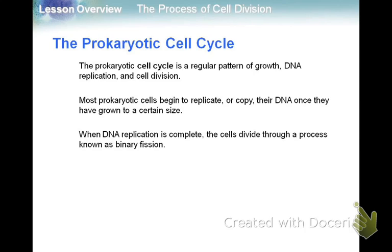The prokaryotic cell cycle is growth, DNA replication, and cell division. Usually a certain size limitation triggers the prokaryotic cell to copy its DNA. Once that's happened, division of prokaryotic cells is called binary fission. Fission just means dividing, and binary means two — so it's literally dividing into two.